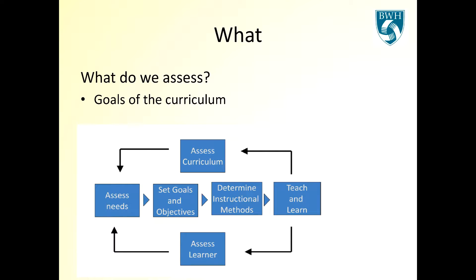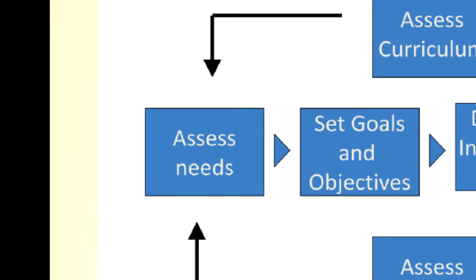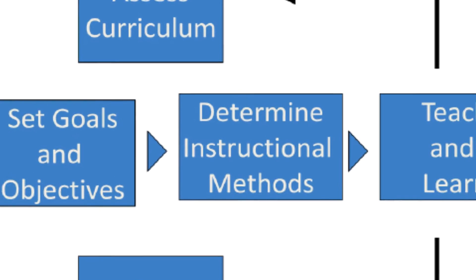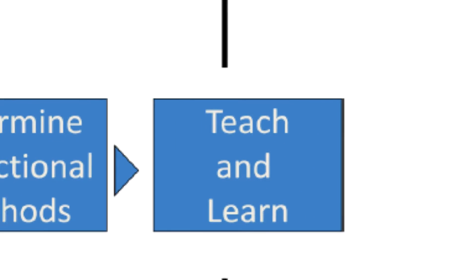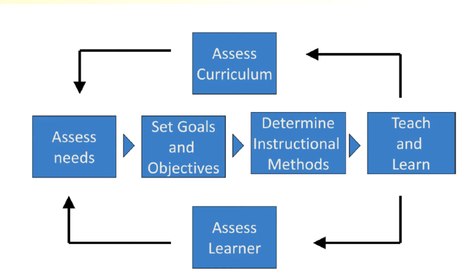The next question is what is it that we're assessing? It's important to think about an entire curriculum. What we're mostly interested in is the goals and objectives — assessment really should be based on those. This schematic shows all the elements that go into a curriculum, including the needs that set the goals, the instructional methods, teaching and learning, and then assessment goes back and resets the needs and also assesses the curriculum.